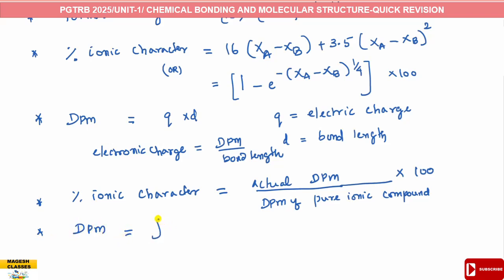The resultant dipole moment of the molecule is equal to the square root of mu1 squared plus mu2 squared plus 2 times mu1 times mu2 times cosine of the bond angle between the bonds.